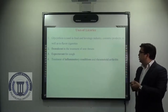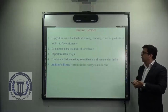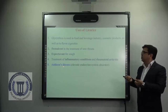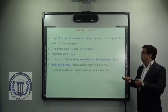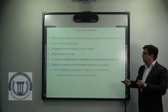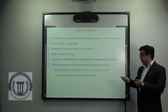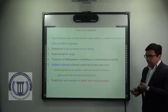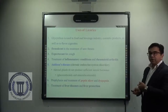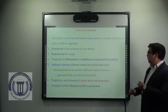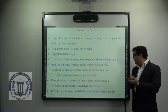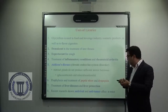It is also used for the treatment of inflammatory conditions and rheumatoid arthritis. It is used for the treatment of Addison's disease, which is a chronic endocrine system disorder where the adrenal glands are not able to produce sufficient steroid hormones like glucocorticoids and mineralocorticoids. It is also used in the prophylaxis and treatment of peptic ulcer and dyspepsia, and found to be useful in the treatment of liver diseases and liver protection. Recent research also shows antiviral and anti-tumor activity of licorice root extract in mice.